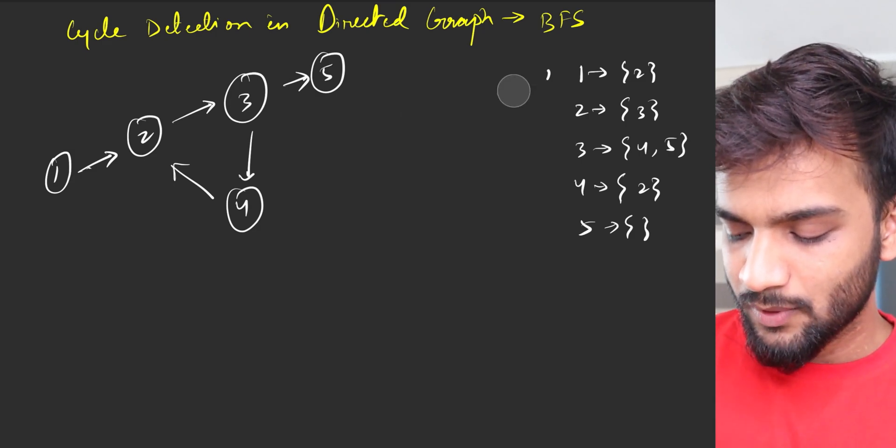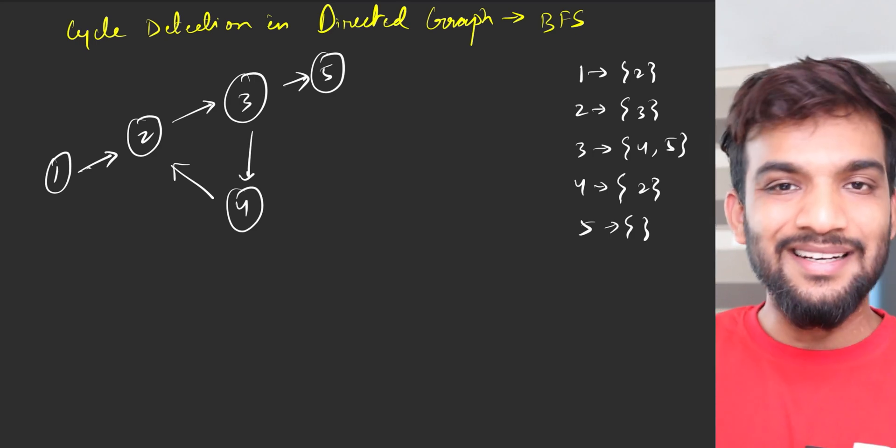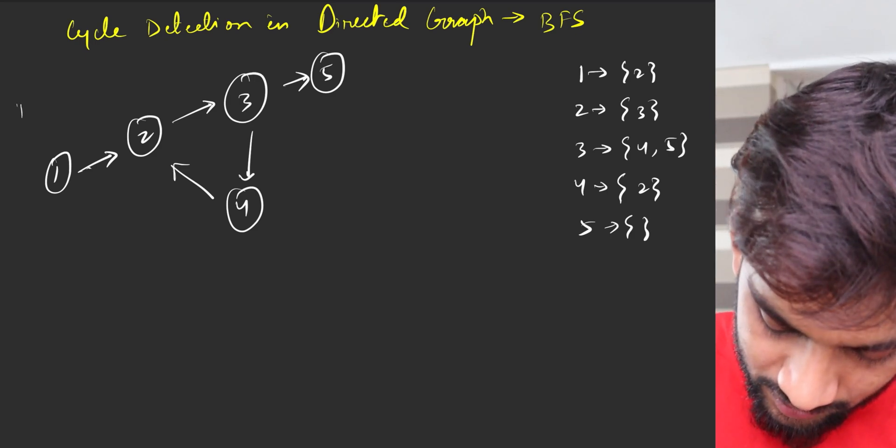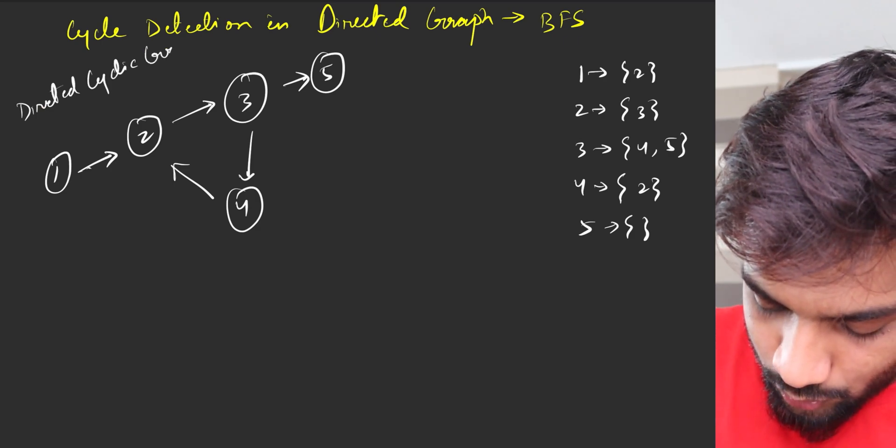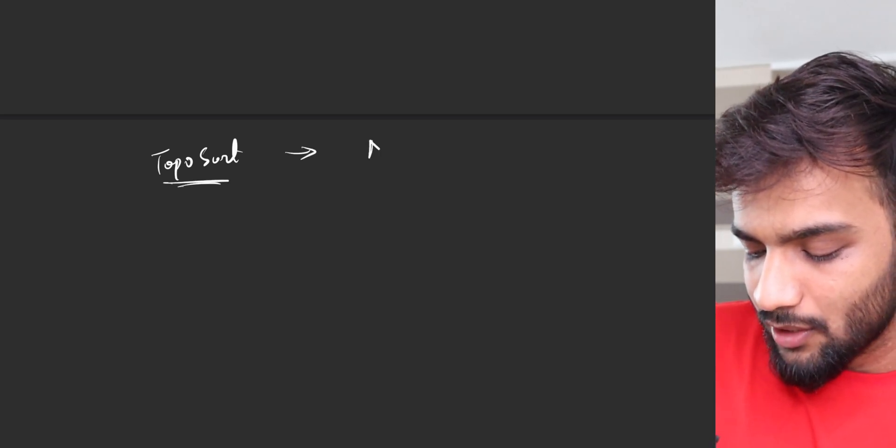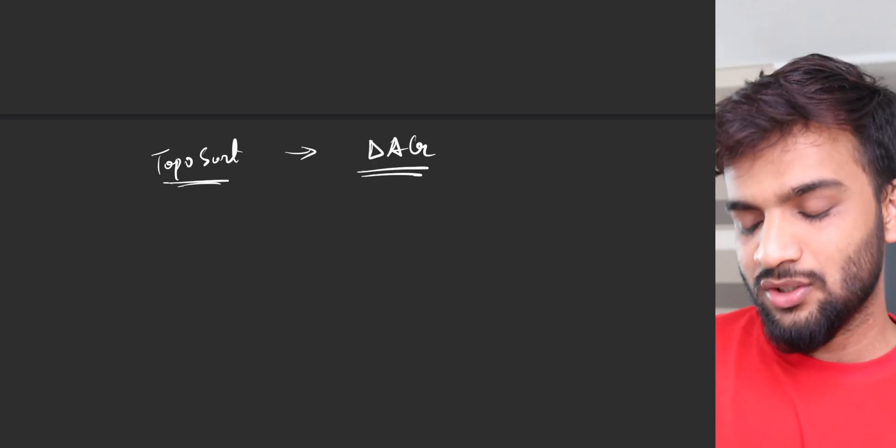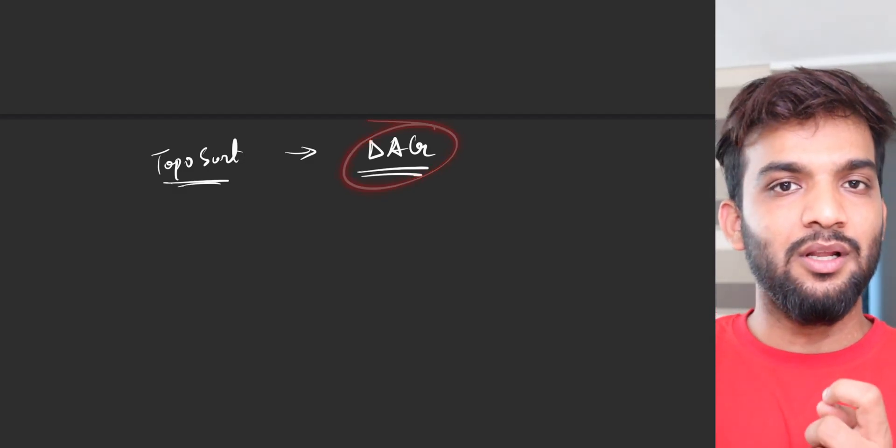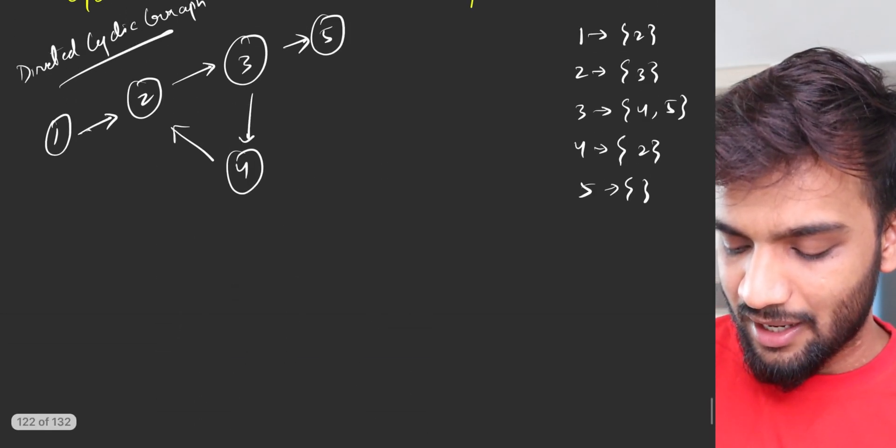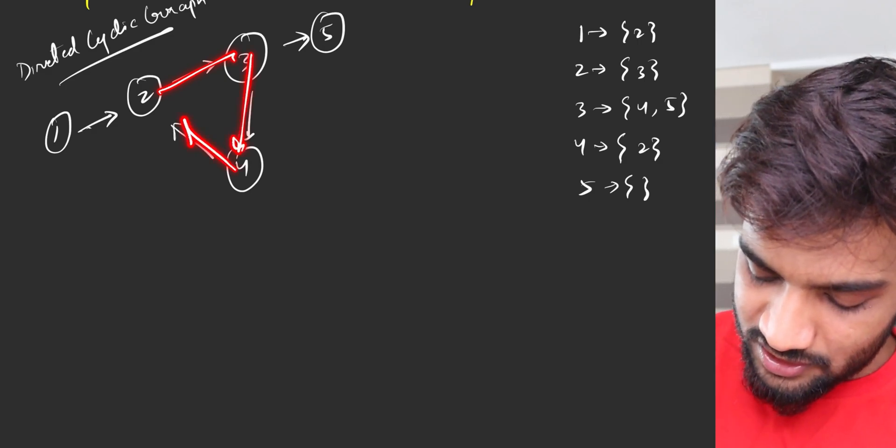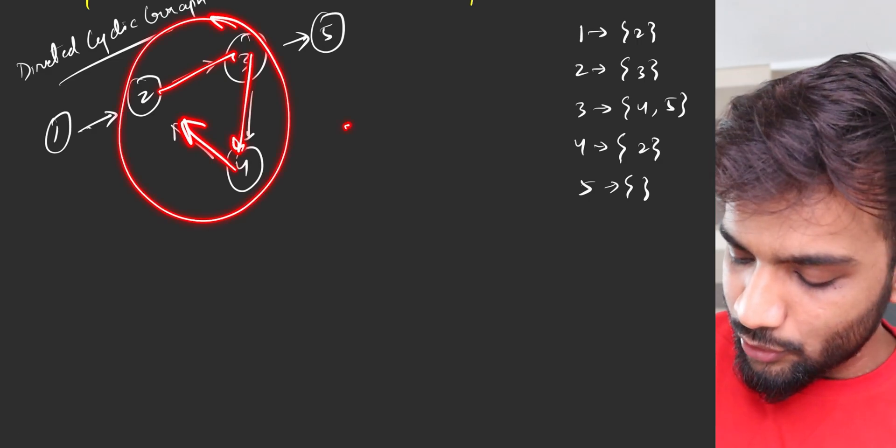So how do you solve this particular problem? So what I'll do is, this is a directed cyclic graph. If you've seen the previous video on topological sort using BFS, you know that topo sorts are only applicable on DAGs. Any of the topo sort is only applicable on a DAG which is directed acyclic graph. If it isn't a cyclic graph it won't be applicable.